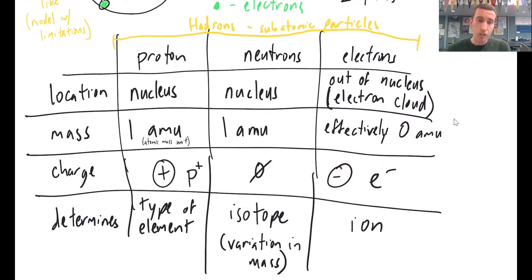And then finally, what does it determine? So the protons determine the type of element. So two protons means helium. One proton means hydrogen. Three protons means lithium. Six protons means carbon. Eight protons, oxygen. Ten protons, neon, et cetera.